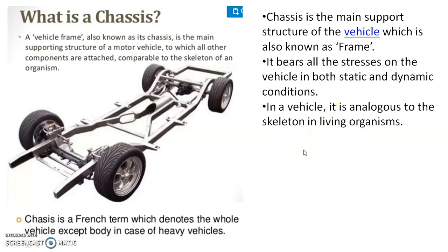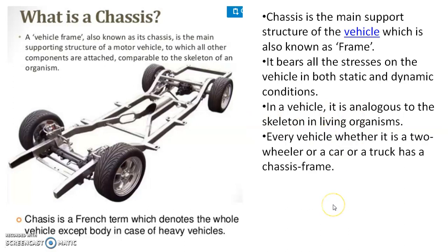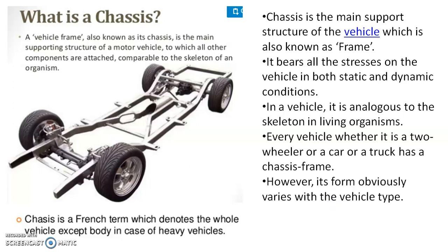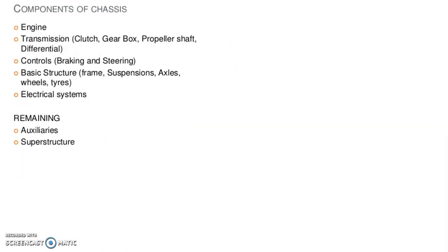Chassis is the main support structure of the vehicle, also known as the frame. It bears all the stresses on the vehicle in both static and dynamic conditions — at a stationary as well as in the moving state. In a vehicle, it is analogous to the skeleton in a living organism. Every vehicle, whether it is a two-wheeler, a car or a truck, has a chassis frame; however, its form varies with the vehicle type. The components of the chassis include engine, transmission (clutch, gearbox, propeller shaft, differential), controls (braking and steering), basic structures (frame, suspensions, axles, wheels and tires), electrical system, and auxiliary and superstructure parts.